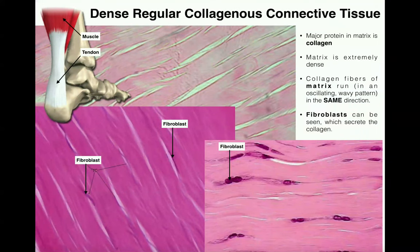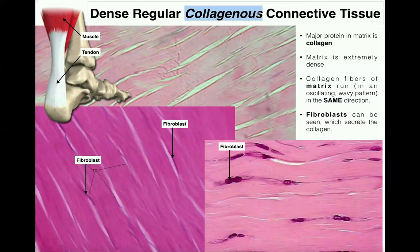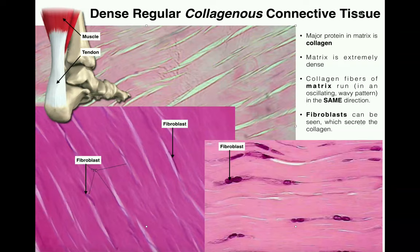The next kind of connective tissue has a long name: dense regular collagenous connective tissue. Most of the time we omit 'collagenous' because it's implied, and just call it dense regular connective tissue. The word 'regular' implies that all of the protein fibers run in the same direction. There's another type called dense irregular connective tissue where fibers run in many different directions — here they run in one direction. The major protein making up those fibers is collagen, and the matrix is extremely dense with it, hence the name.